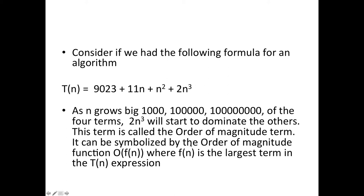The term that we find that's the biggest is called the order of magnitude term. It can be symbolized by the order of magnitude function O(f(n)) where f(n) is the largest term in the T(n) expression. Here's T(n) - this is the term that grows the fastest and we even ignore the coefficient, so just n cubed. The f(n) that you would put in this O expression would be n cubed.